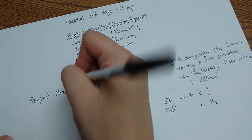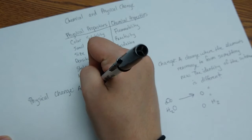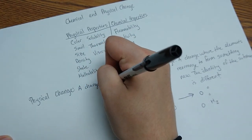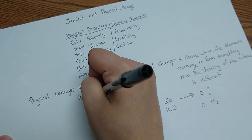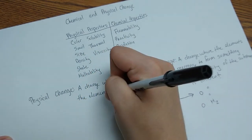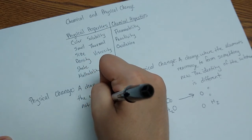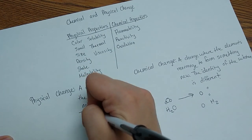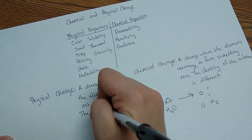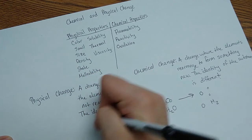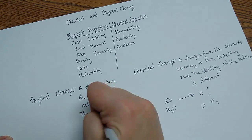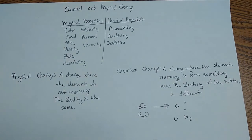So physical change is the opposite. It's a change where the elements do not rearrange. And the identity is the same. So something like ripping a paper in half, right? It's still made of paper. Taking a copper block and melting it down into wires. It's still copper.